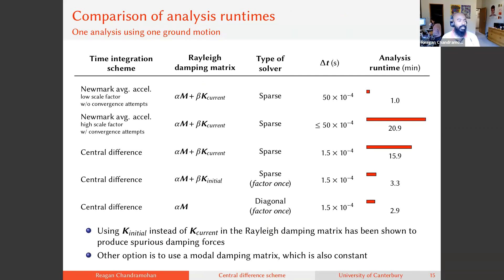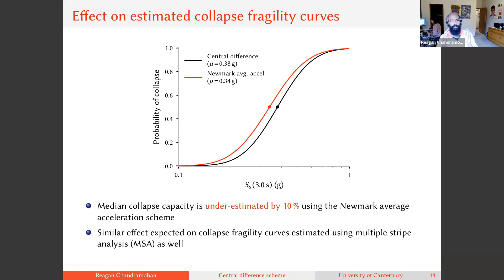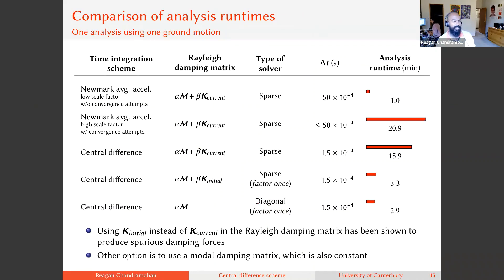That covers robustness. Hopefully this convinces you that the central difference scheme is more robust for non-linear analysis — it removes the effect of numerical non-convergence, giving you more reliability and accuracy in results. Now let's talk about efficiency, because using the central difference scheme with its smaller delta-t might seem like a tradeoff.